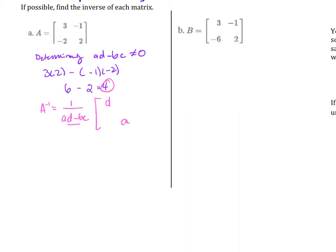D and a will switch, and then for b and c we're just going to add a negative to it, so that does not switch places. Let's fill this in. It's 1 over 4, so we're multiplying the scalar 1 over 4. Looking at our original matrix, 2 now is up at the top, 3 is at the bottom, 1 and 2 are in the same spot, and the opposite signs are positive.